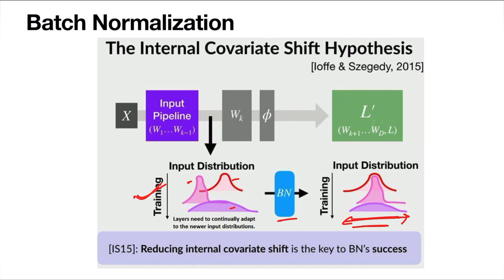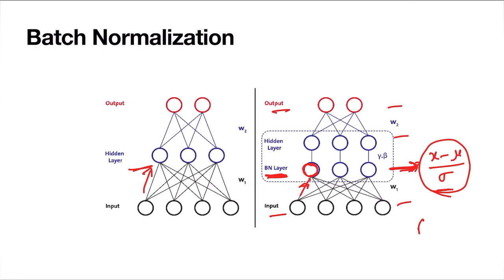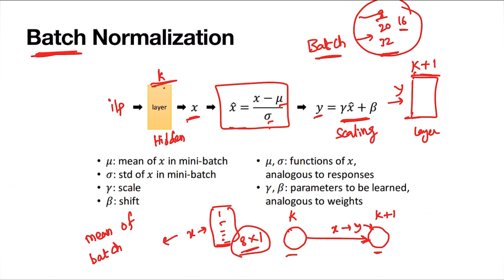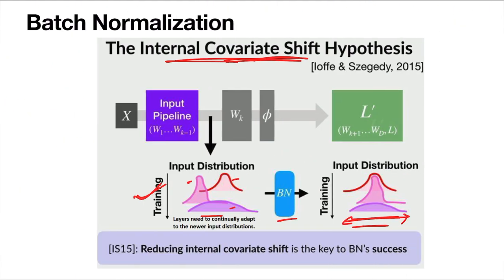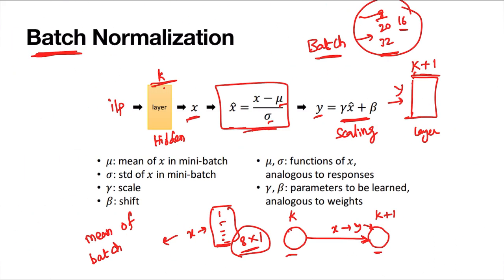This is how batch normalization reduces internal covariate shift — by making all inputs into a common distribution with zero mean and unit variance, eliminating the distribution changes in hidden layers. In the next video we will learn in detail about the batch normalization algorithm, how it works with batches, what the gamma and beta parameters are, whether there are learnable parameters, and what happens during back propagation. Thank you.